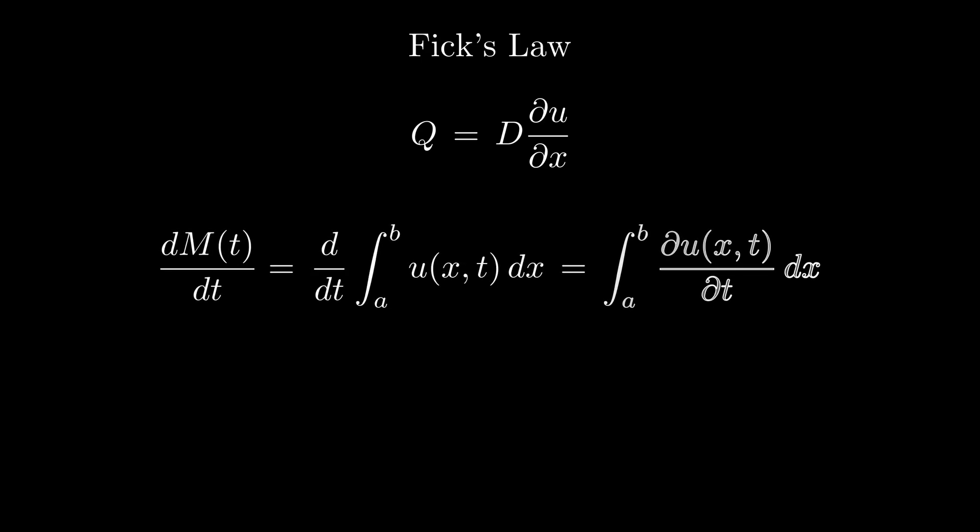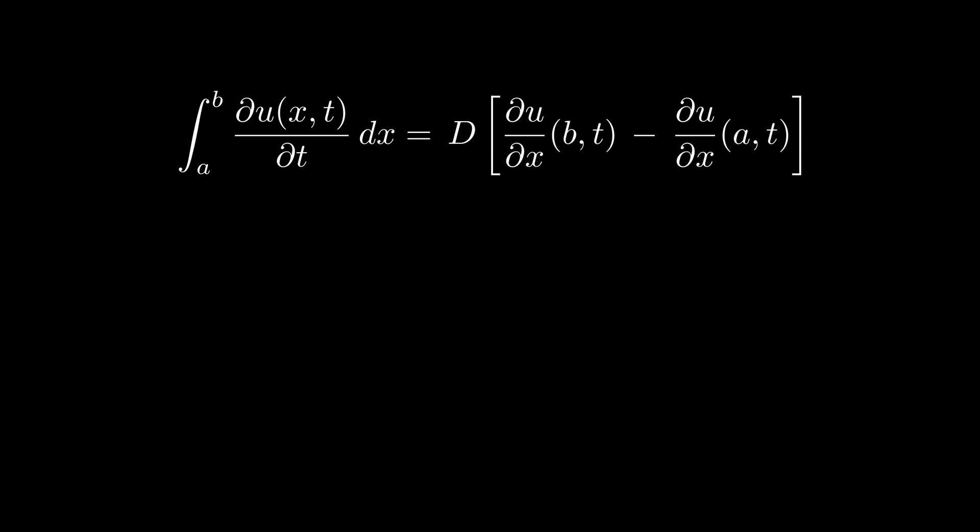Using Fick's law, our integral becomes the difference of gradients at the endpoints times some constant D. Don't worry, things are getting simpler now. We apply the fundamental theorem of calculus and differentiate with respect to b. The right-hand side becomes the second-order derivative. Here is where all applied mathematicians smile because we have just derived the famous heat equation. This is because heat propagates in the same way as a dissolving substance does in our example.